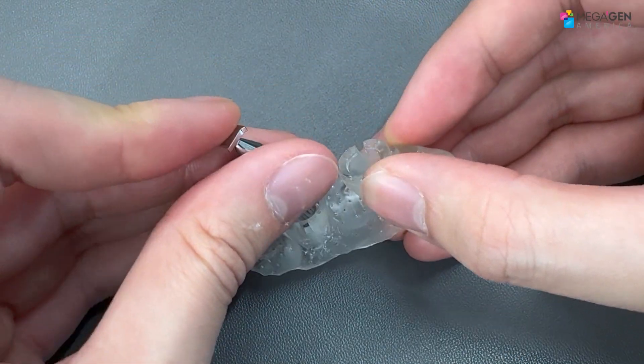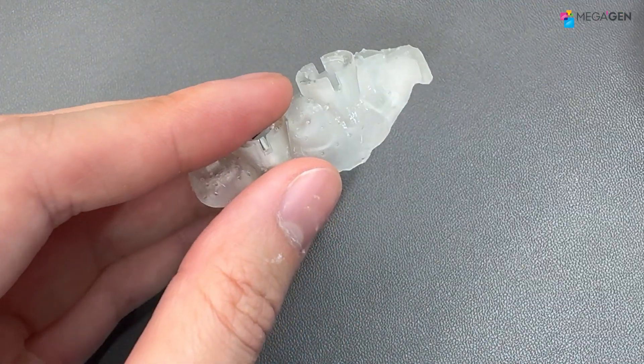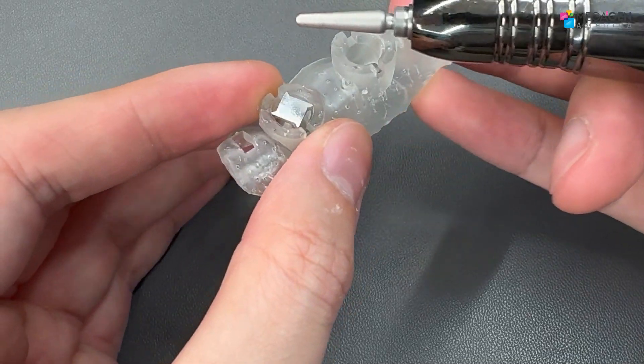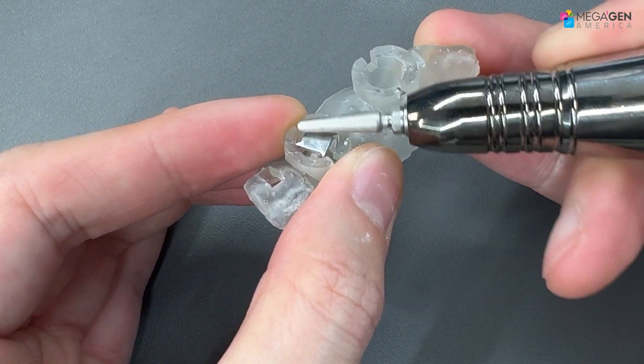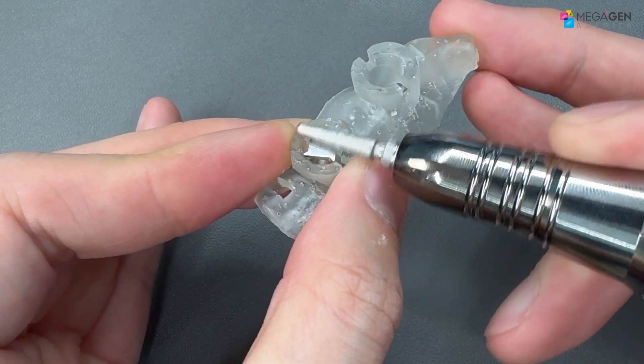The next step is to trim any bumps made from the support. If you have a burr, you can smoothen out the bumps carefully, making sure the drill holes are not touched.